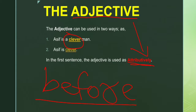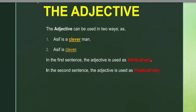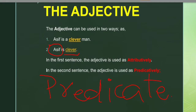In the second sentence, 'Asif is clever,' the adjective is used predicatively. It is called predicative because after 'clever' there is no noun, but it is qualifying the noun 'Asif.' Here 'clever' is a part of the predicate. So we say the adjective is used predicatively.